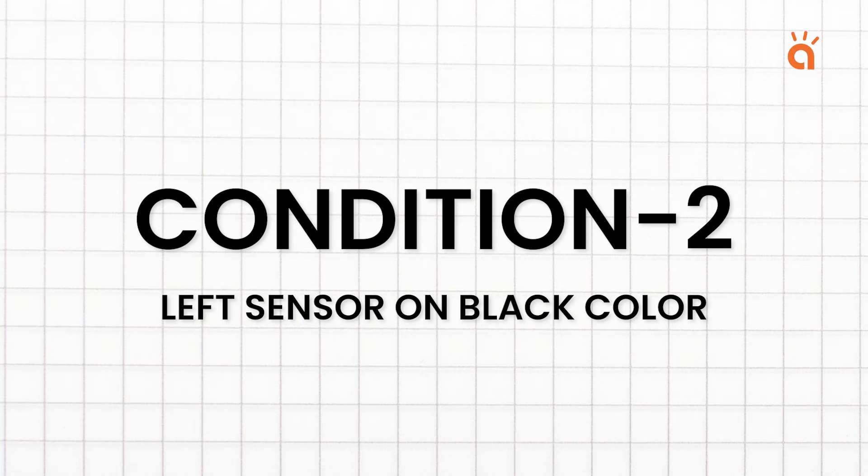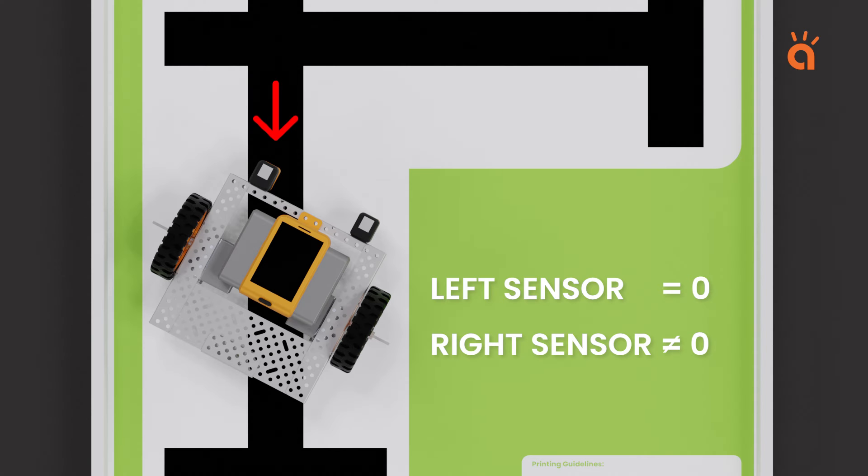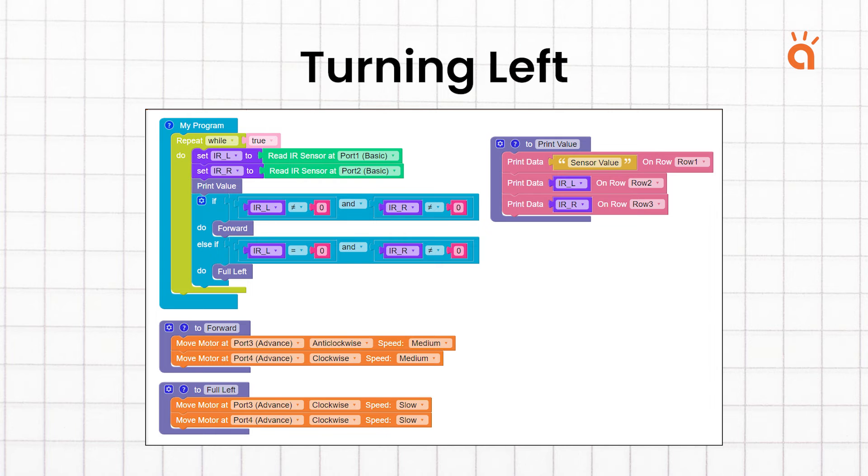Left sensor on black. In this condition, the robot is tilted to the right side. The left sensor is on black color and the right sensor is on white color. Hence the left sensor will return a 0 and right sensor will return a value not equal to 0. The robot will be programmed to turn left in this case until the condition is changed. Here is the code.